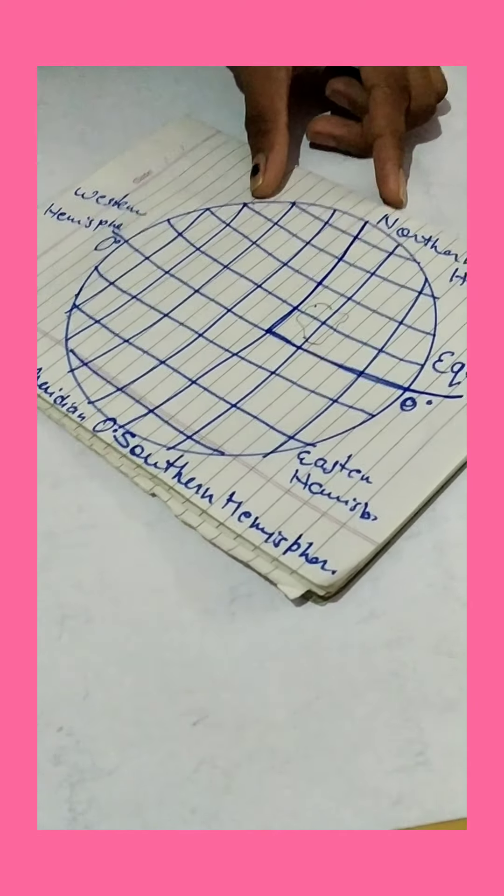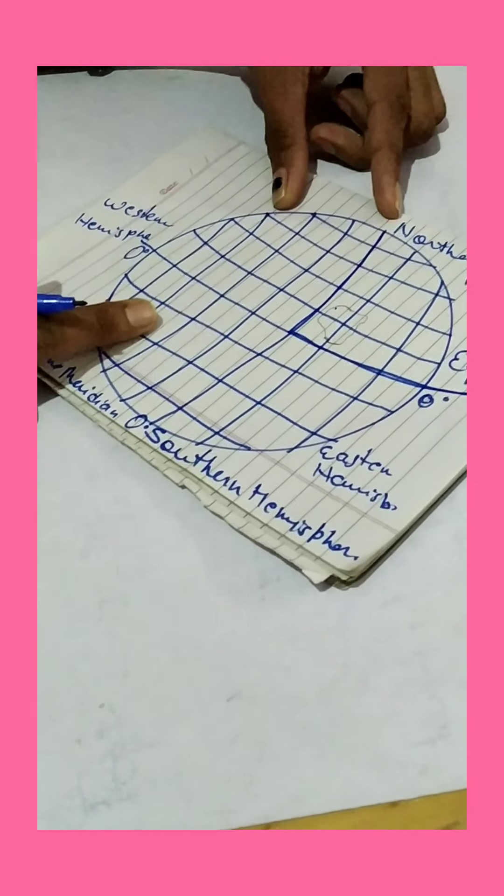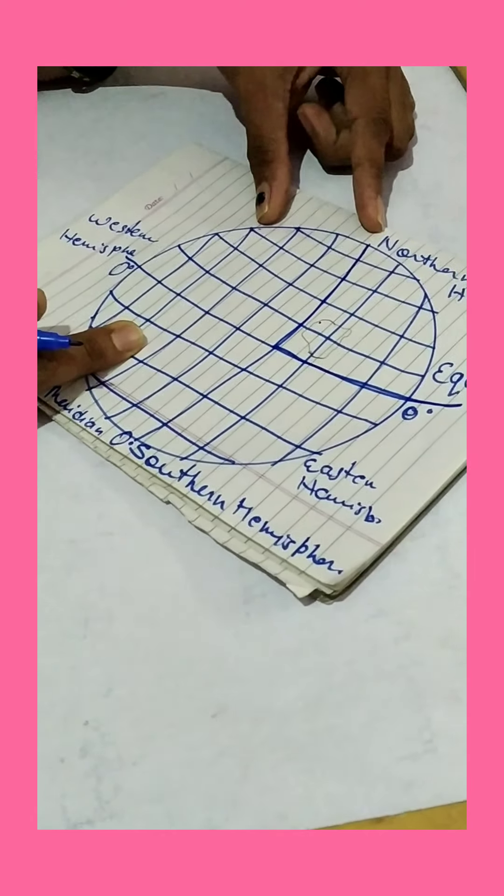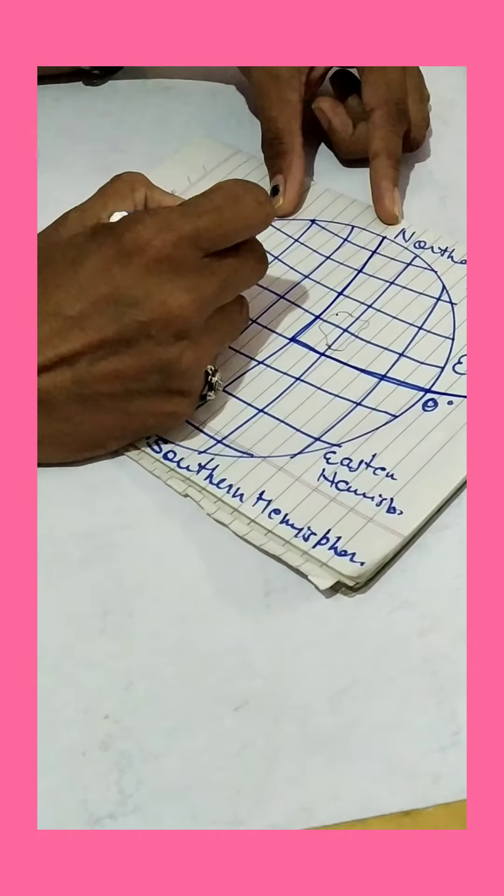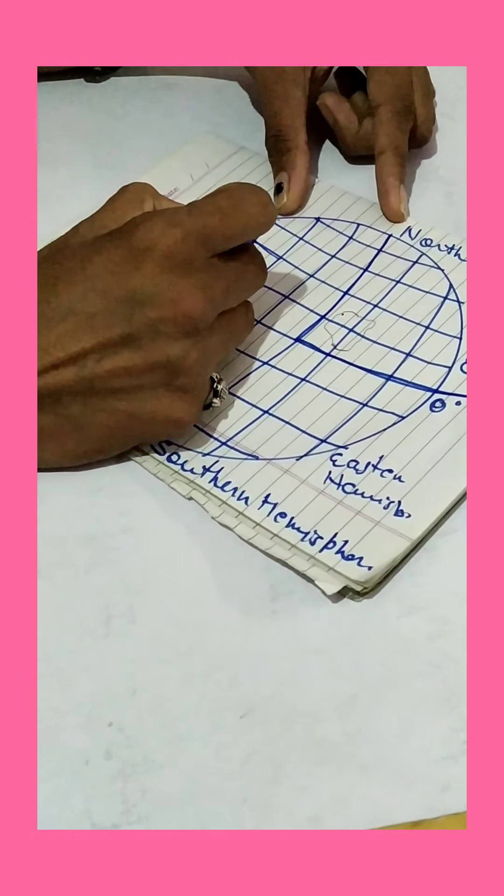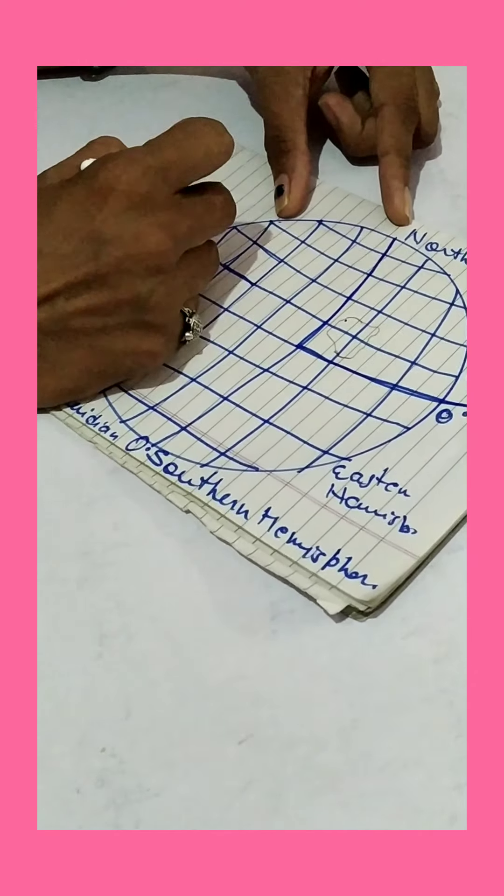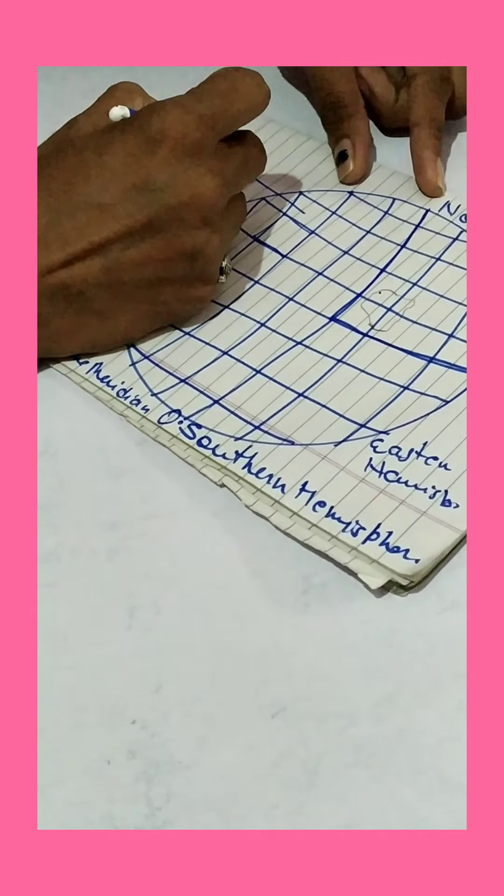When we draw latitudinal and longitudinal lines on the map, they create boxes. These boxes are known as grids.